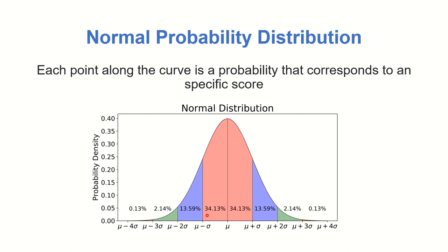At the baseline of the normal curve there are scores — for example, standard scores where the mean is equal to zero and the standard deviation is one. Each of the scores found at the baseline has a corresponding probability. Just by looking at the graph of a normal distribution, we are able to collect many pieces of information that could characterize our data. That is why it is important for us to familiarize ourselves with the properties of a normal distribution.